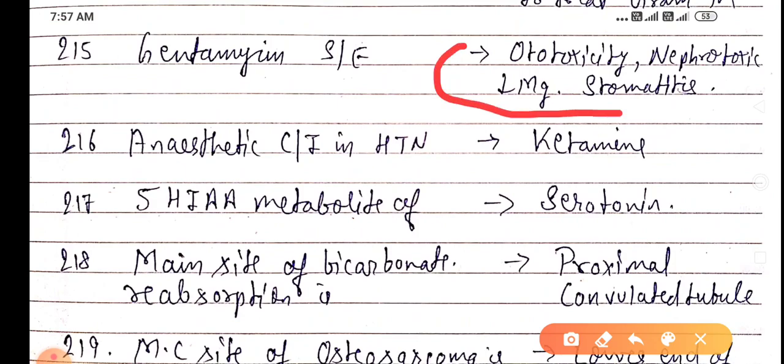Anesthesia contraindicated in hypertension is ketamine. 5-HIAA is the metabolite of serotonin.